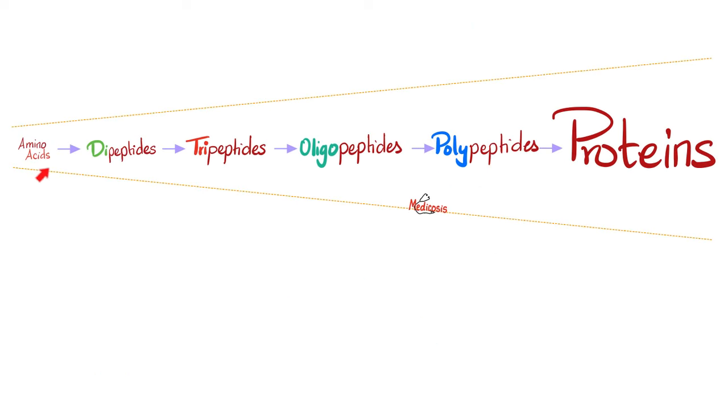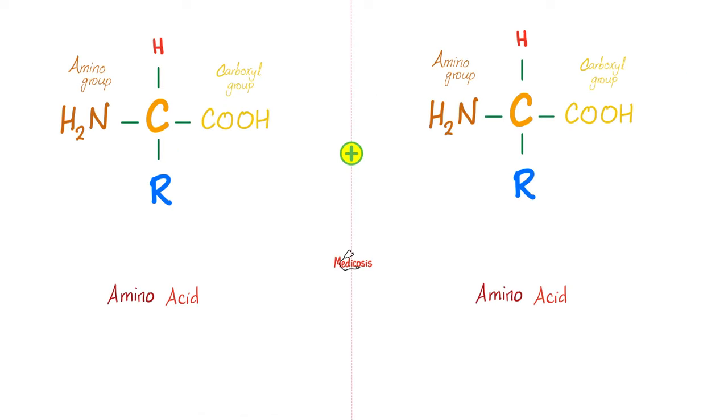So there you go. Here's your amino acid, and then lump two together, dipeptides, and then tripeptides, oligopeptides, polypeptides, and then proteins. But how do you lump them together? By forming a peptide bond.